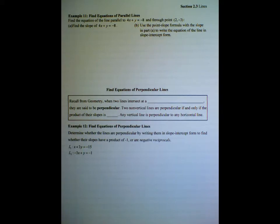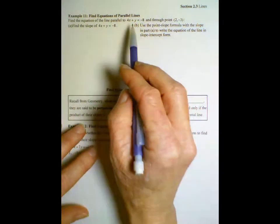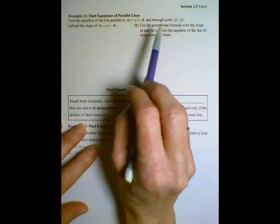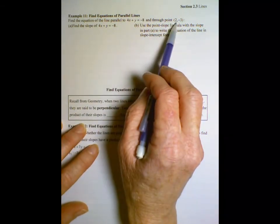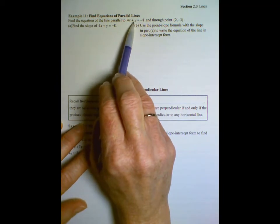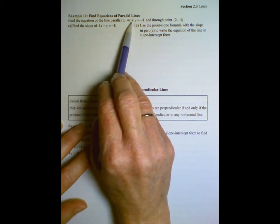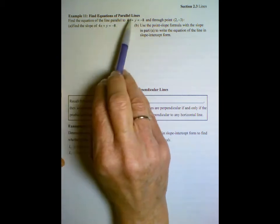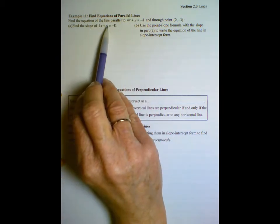So we're asked to find an equation for a line in this case that is parallel to 4x plus y equals negative 8 and it passes through this point. Remember for parallel the slopes have to be the same. If it's parallel to this line, it will have the same slope as this line. So here we have that line. Let's find the slope of that line.